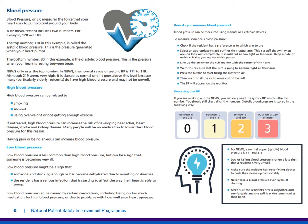Having pain or being anxious can also increase blood pressure. Low blood pressure is less common than high blood pressure, but can be a sign that someone is becoming very ill — it may indicate someone isn't drinking enough, has become dehydrated due to vomiting or diarrhoea, or has a serious infection starting to affect the way their heart pumps. Low blood pressure can be caused by certain medications or problems with how well your heart squeezes. Blood pressure can be measured using manual or electronic devices. For NEWS, you only need the systolic BP — the top number — though you should still chart all numbers. The systolic blood pressure is scored between 0 and 3: between 111 and 219 is normal; under 90 or over 220 is a score of 3.